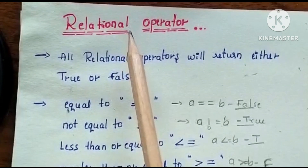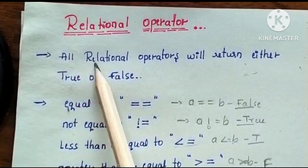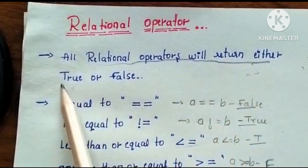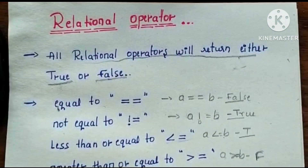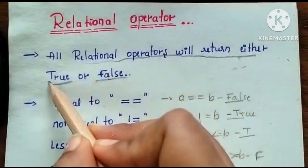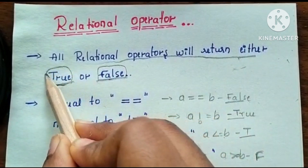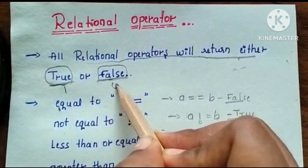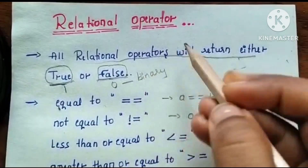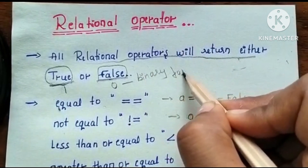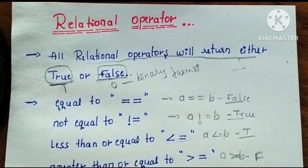We will start with relational operators. All relational operators will output either true or false — this is binary format. So the relational operator output is true or false.